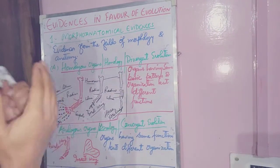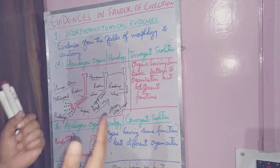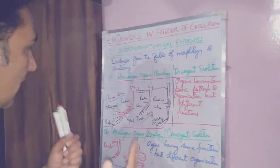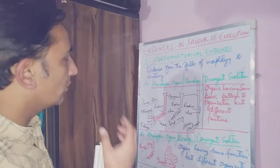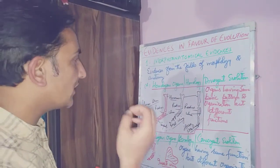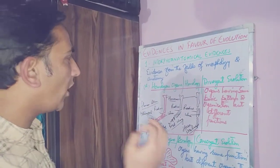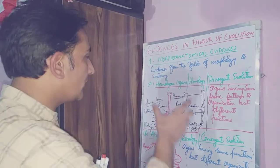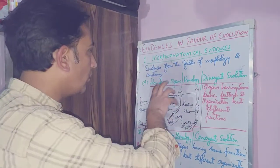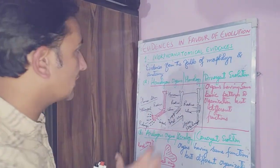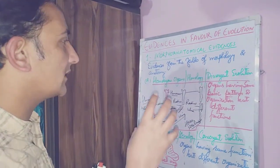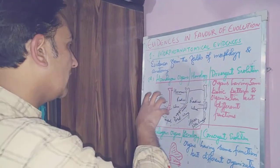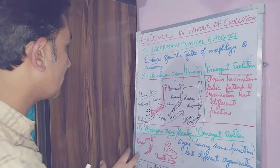Organs which have the same basic plan and organization but quite different functions are known as homologous organs. We can understand this through the diagrams drawn here.